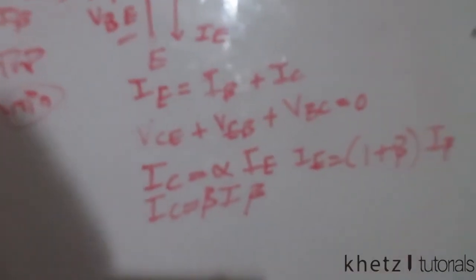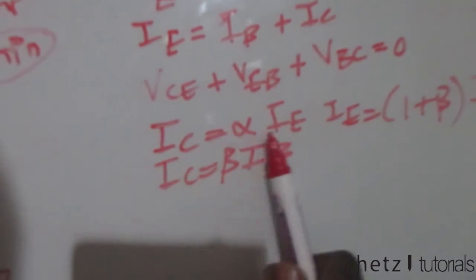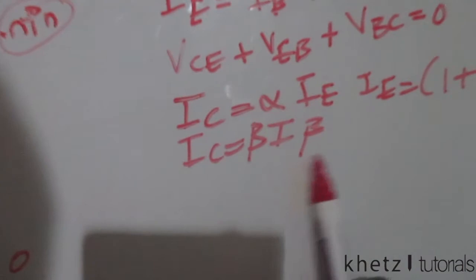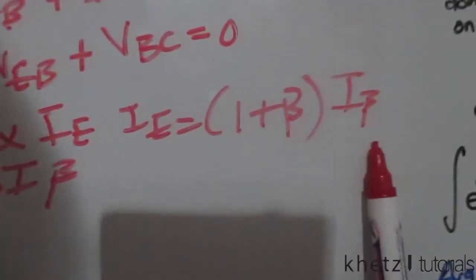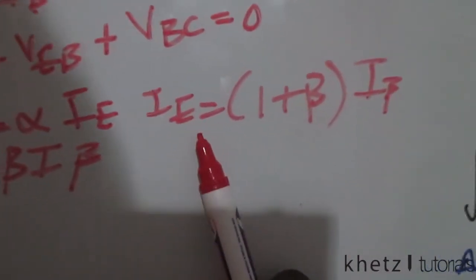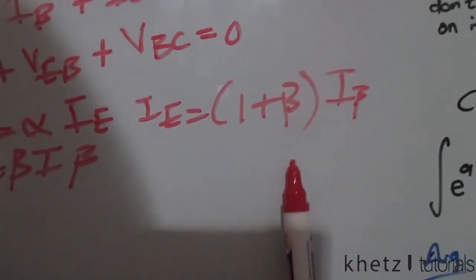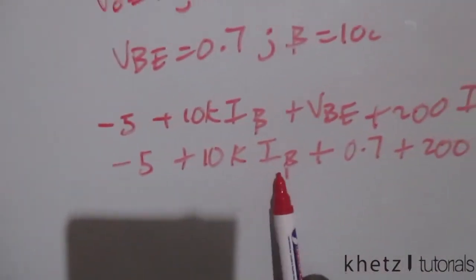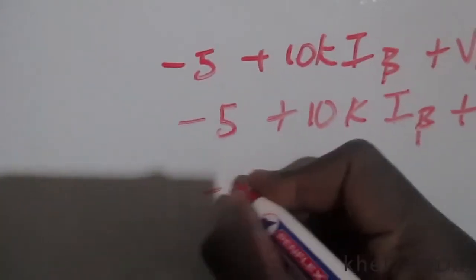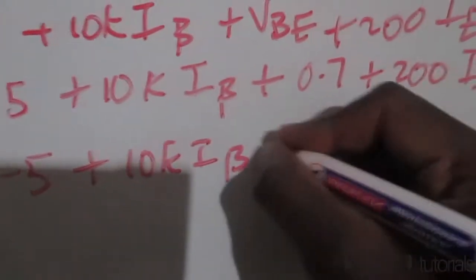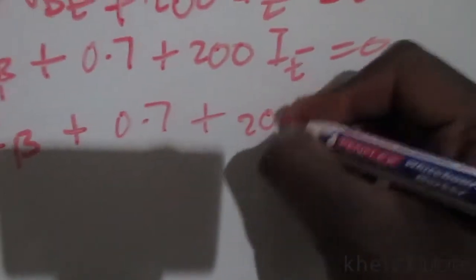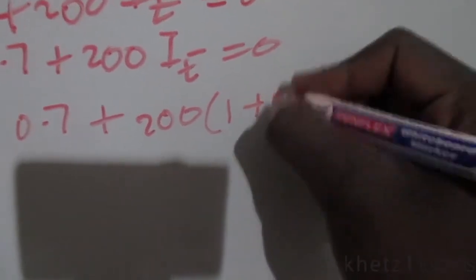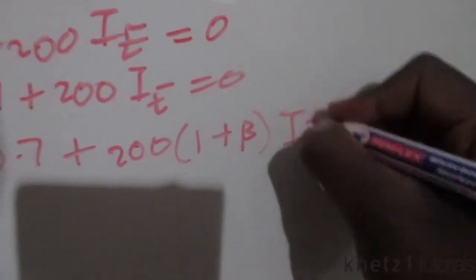We can't use equations involving ic or unknown voltages at this point. However, the equation ie = (1 + beta)·i_beta lets us express ie in terms of i_beta, which is already in our KVL equation. Substituting, we get: negative 5 plus 10k·i_beta plus 0.7 plus 200·(1 + beta)·i_beta = 0.